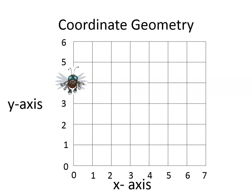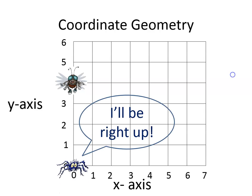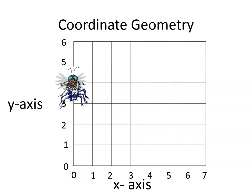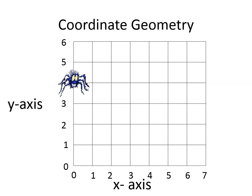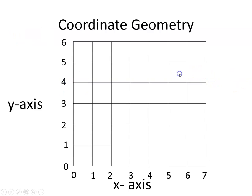There's our fly — oh, this one looks a little tricky. There's the spider; he says 'I'll be right up.' How far to the right does he have to move? He doesn't move right at all, so think about what number that would be: zero. Then he went up four, so the spider is at zero comma four. He did not move on the x-axis and he went up four on the y-axis.